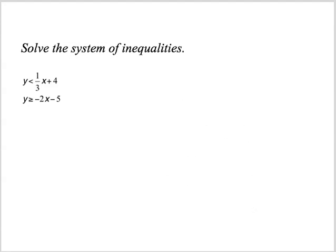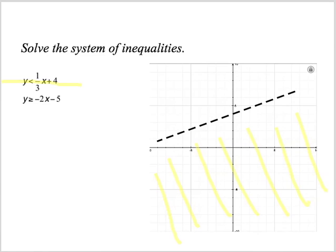The last thing we learn in this chapter is to solve a system of inequalities. When I graph the first inequality, y < (1/3)x + 4, I've got a dashed line through a y-intercept of 4 with a slope of up 1 over 3. I shade below the line because if I test (0, 0), I get 0 < 4, which is true. This is the solution region for this line.